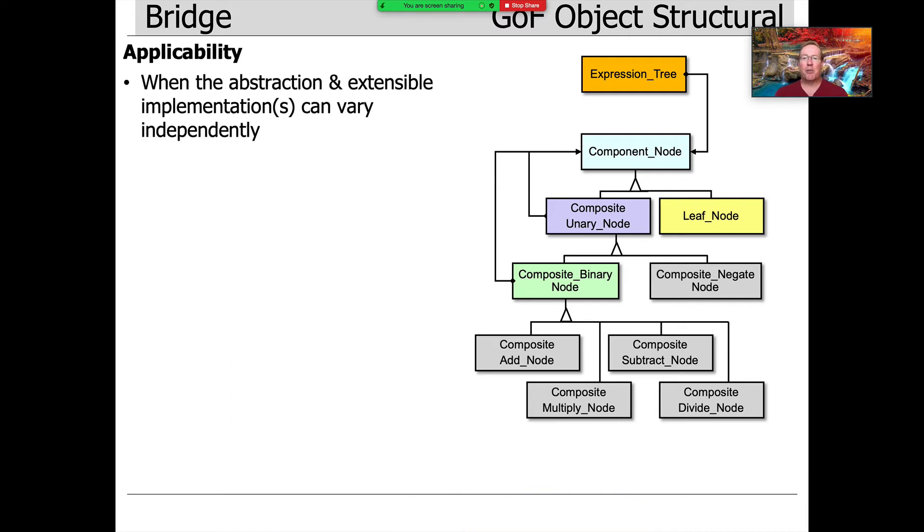When would you apply this pattern? Well, when the abstraction and the implementations can vary independently. That's basically the deal. If they never vary, you don't need this pattern. If there's only ever one way to do things, it's overkill. But oftentimes, there are multiple ways to do things.